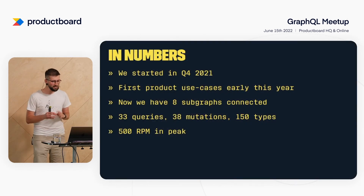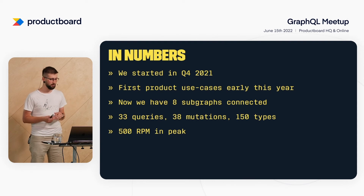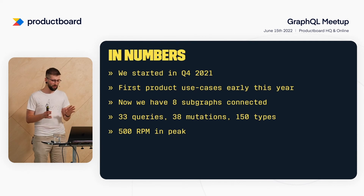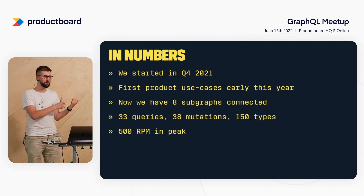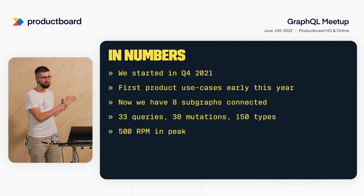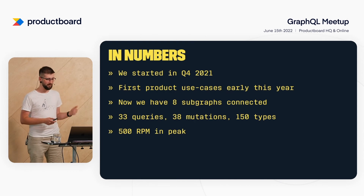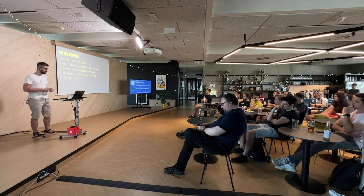In numbers: we started in Q4 2021, and the first product use cases came early this year. We now have eight subgraphs connected to our GraphQL Gateway in production — something around 33 queries, 38 mutations, and around 150 types. At peak, we're getting something around 500 requests per minute, which is obviously just a sign that we are starting. ProductBoard is a B2B company, but it's nice to see it growing over time along with the use cases.